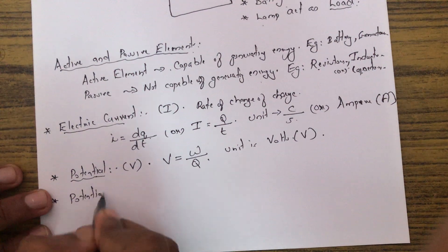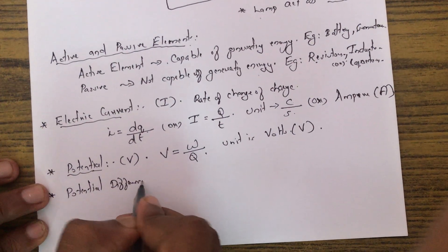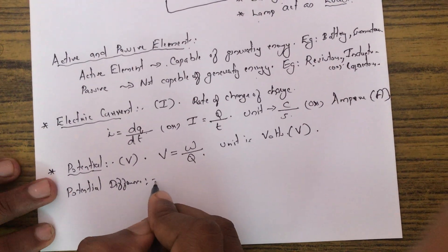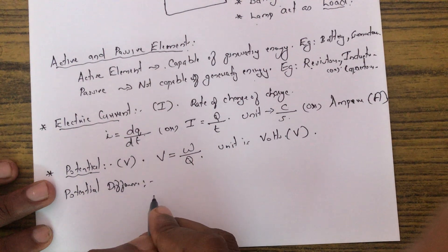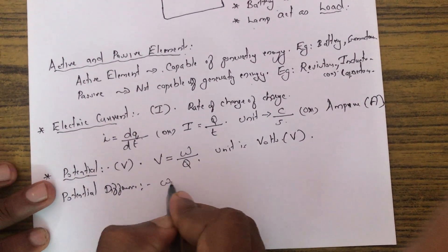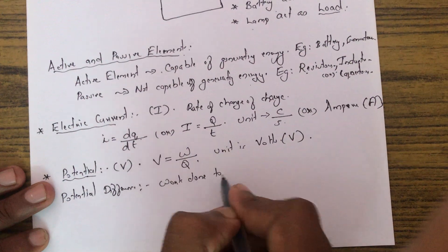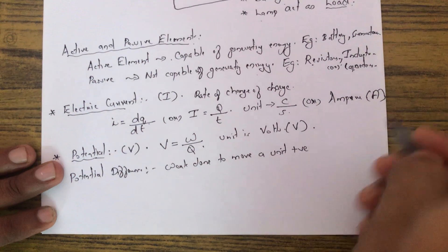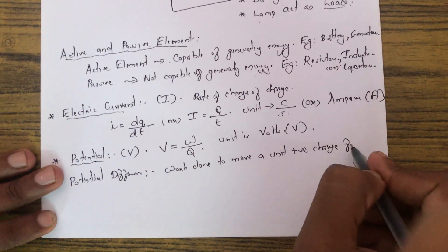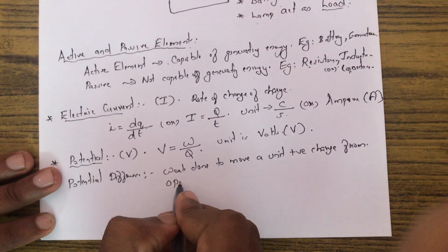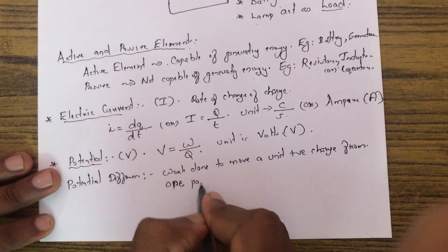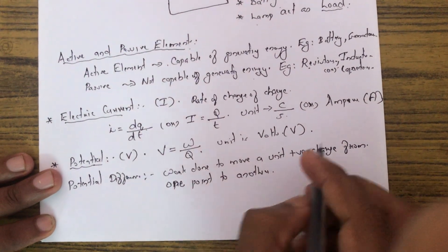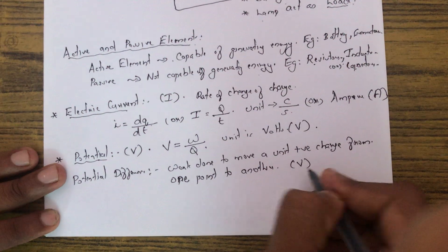Potential difference is the work done to move a unit positive charge from one point to another. Its unit is also volts.